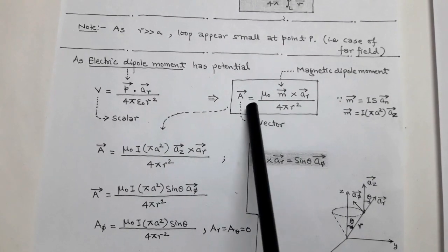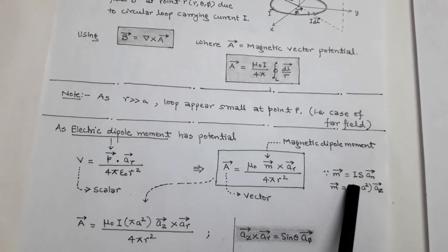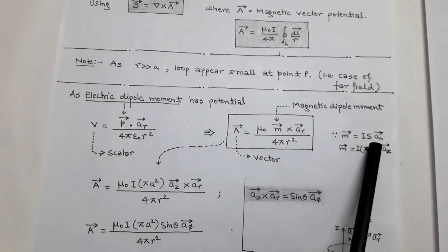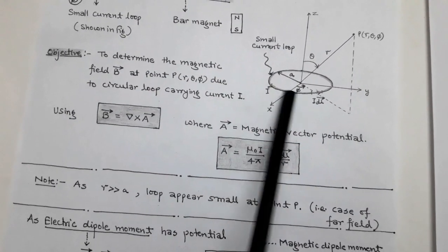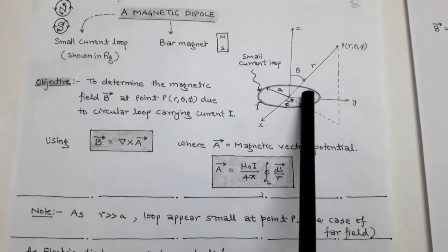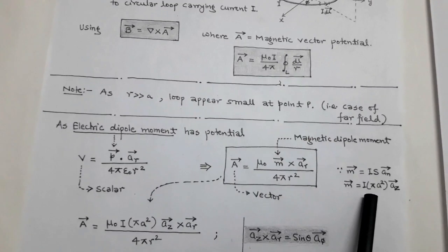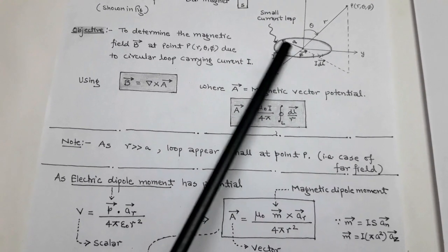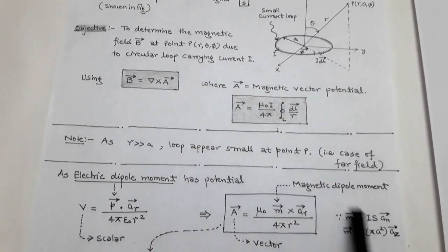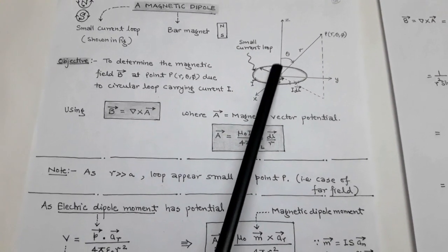The magnetic dipole moment is m⃗ = I · S · n̂, where I is the current flowing in the small current loop, S is the area of the loop, and n̂ is the normal unit vector giving the direction. Since the loop has radius a, the area S = πa². Thus m⃗ = I · πa² · ẑ, because the normal unit vector equals ẑ.